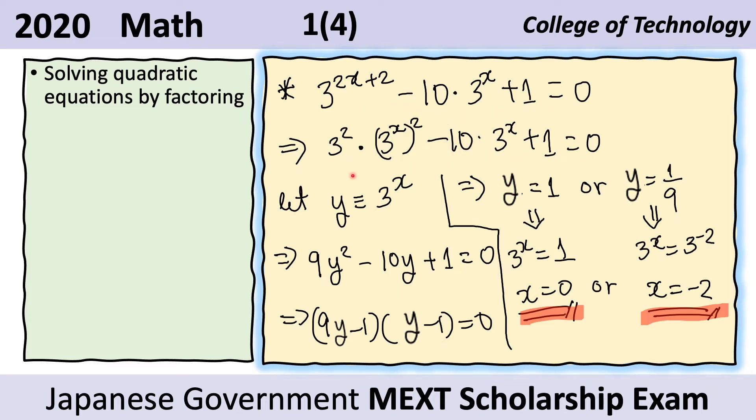We have this, and we notice that 3 to the x is squared here, and here it is not squared. So we can actually make the substitution y equals 3 to the x. By doing this, we get a quadratic equation in y.